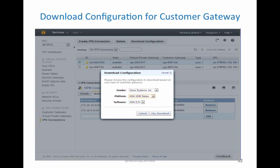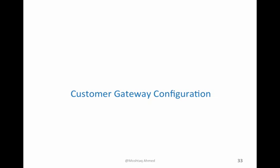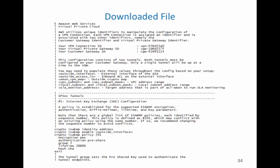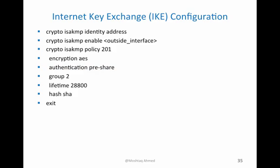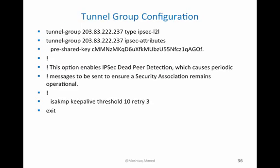I downloaded the configuration for Cisco ASA 5500 series, version 8.2 and above. That downloaded configuration can be used for the customer gateway configuration. The file shows the cryptographic Internet Key Exchange configuration - it gives you a crypto policy including group, lifetime, encryption (AES or 3DES), authentication, and hash technology. It also provides the outside interface and tunnel group configuration with IPsec attributes, special key, and keepalive retry settings.